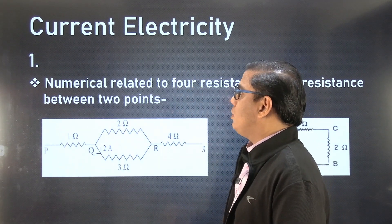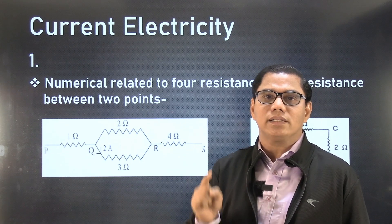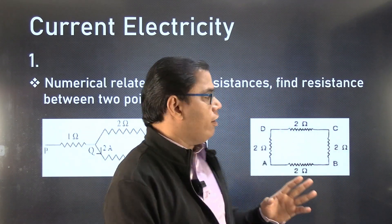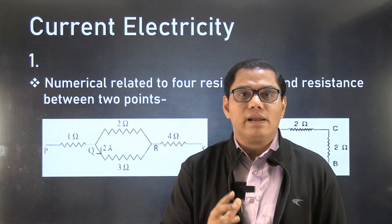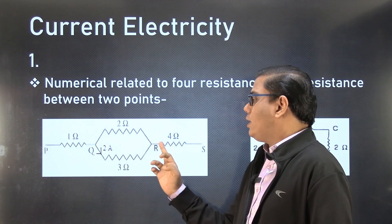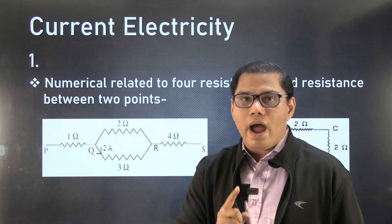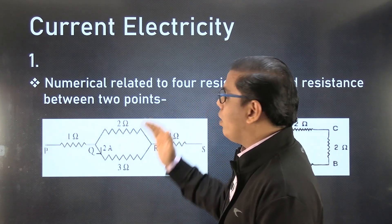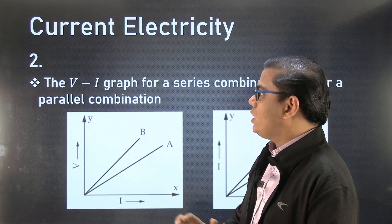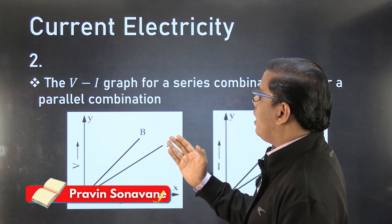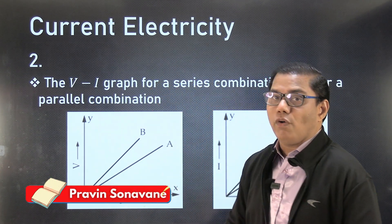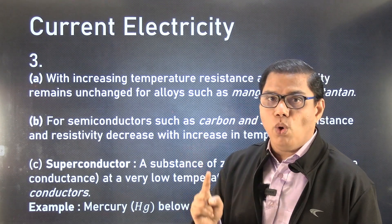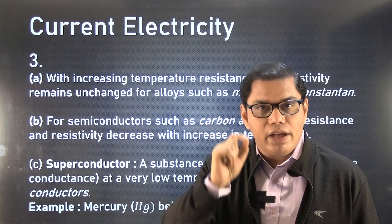Next chapter: current electricity. There are many numericals, including one where four resistors are connected in different arrangements and you find the total resistance across two points — such as across Q and R or across P and S. I have an extensive video covering these numericals. Prediction number two is related to the potential difference and current graph for series and parallel combinations. This question is also very important. Please don't forget to learn these minor points.